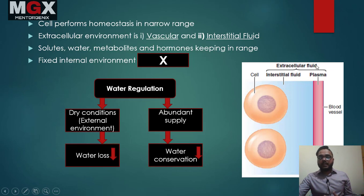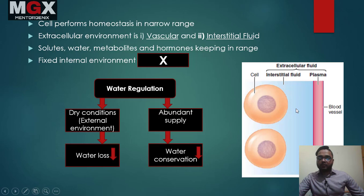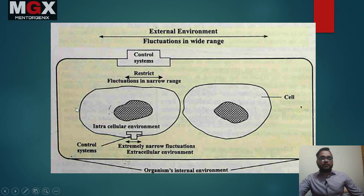This is the extracellular environment called interstitial fluid. Interstitial fluid — which we will read about in chapter 14 — is a fluid surrounding the cells. It is not inside blood vessels. This is a book diagram showing the external environment with a very wide range and our body maintaining a narrow range through a control system.